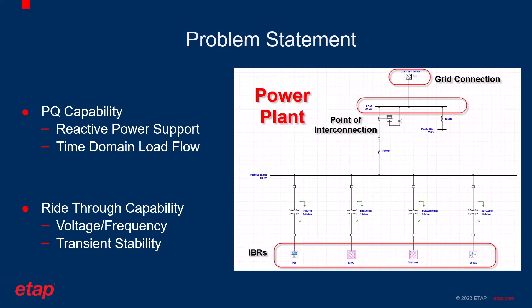Utilities also have requirements on ride-through capabilities of IBRs and power plants, meaning that in case of a voltage or frequency event, the inverter has to be capable of supporting a sufficient amount of reactive power to maintain the voltage at its neighboring buses and prevent unwanted trippings. These criteria — including the time the inverter needs to maintain voltage and support reactive power, as well as the voltage level or frequency — are all mandated as part of the grid code studies.